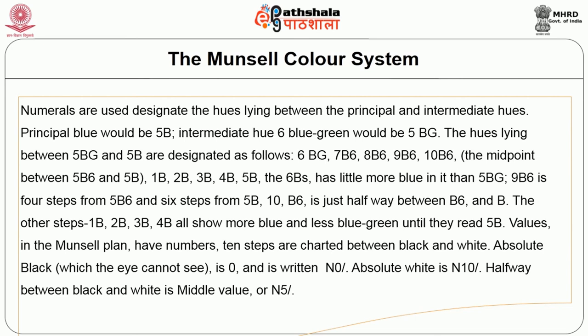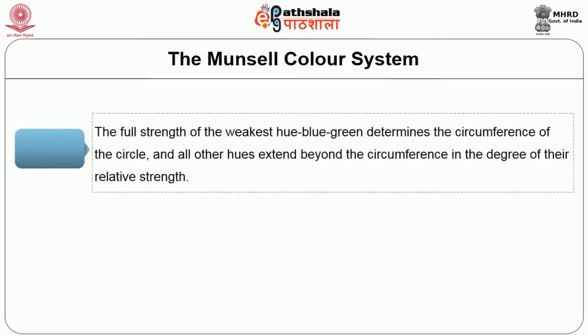The hues lying between 5BG and 5B are designated as 6BG, 7BG, 8BG, 9BG, 10BG — the midpoint between 5BG and 5B — then 1B, 2B, 3B, 4B, 5B. 9BG is four steps from 5BG and six steps from 5B; 10BG is just halfway between BG and B. Steps 1B, 2B, 3B, 4B all show more blue and less blue-green until they reach 5B. Values in the Munsell plan have numbers with 10 steps charted between black and white. Absolute black is number 0, absolute white is number 10, and halfway between is middle value number 5. The full strength of the weakest hue, blue-green, determines the circumference of the circle, and all other hues extend beyond the circumference in degree of their relative strength. The scale of red chroma is written R1, R2, R3, etc.